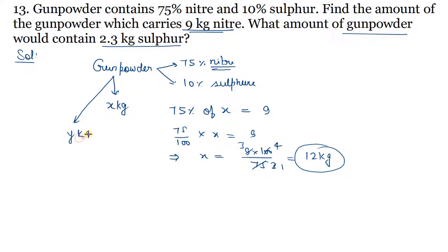Let y kg be the gunpowder. If y kg is the gunpowder, then 2.3 kg sulfur exists in it. So we will use 10% because gunpowder is 10% sulfur.